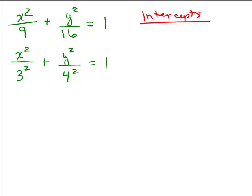So what are the intercepts going to be? The x intercepts will be underneath the x is the 3, so that will be 3, 0 and negative 3, 0. And what are the y intercepts going to be? I've got 4 squared so it's going to be 0, 4 and 0, negative 4.